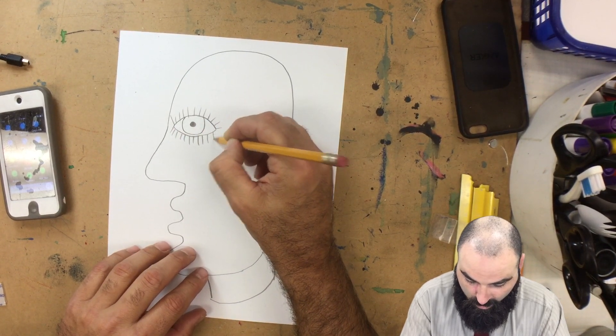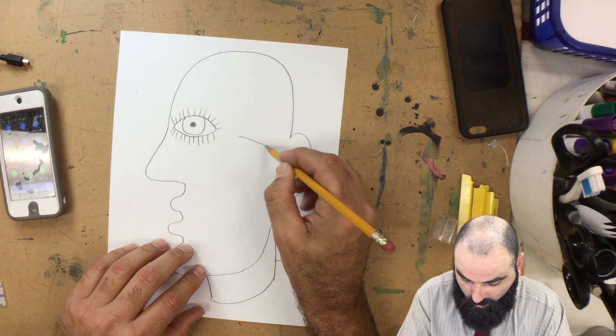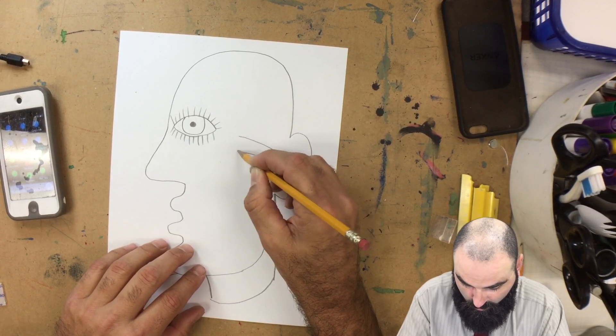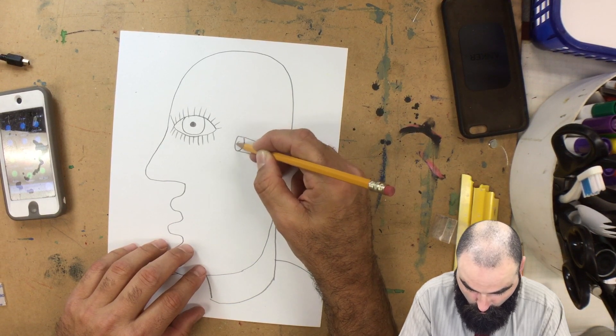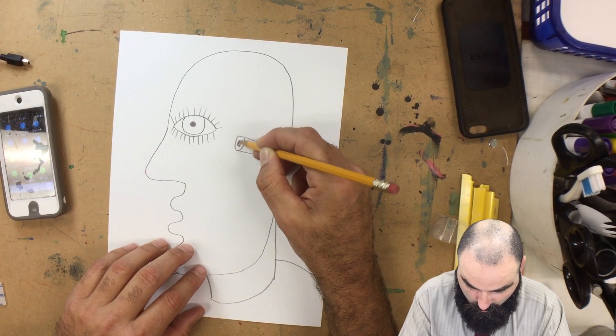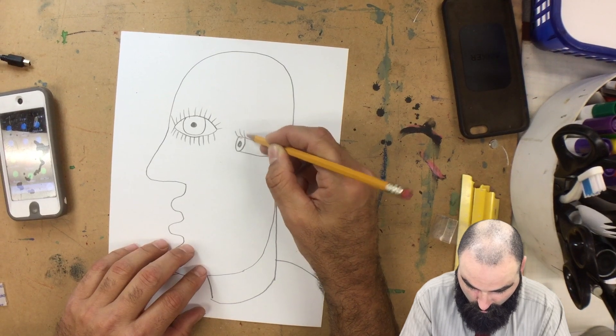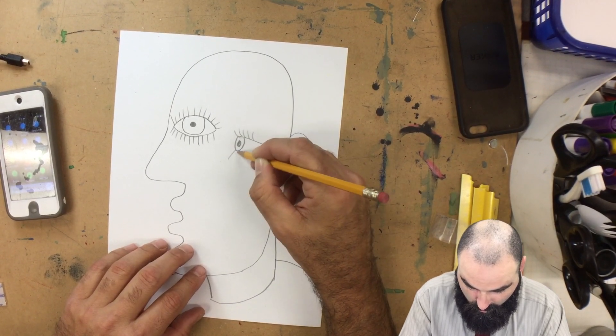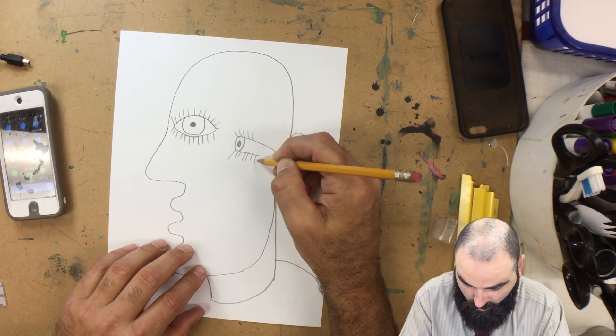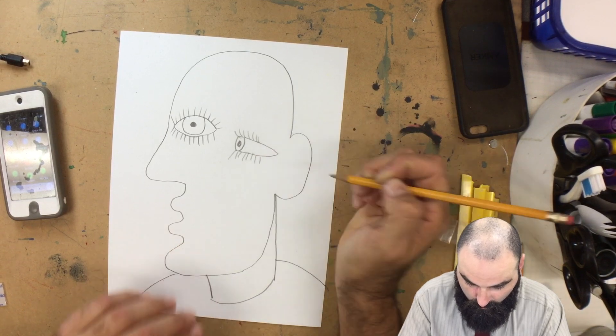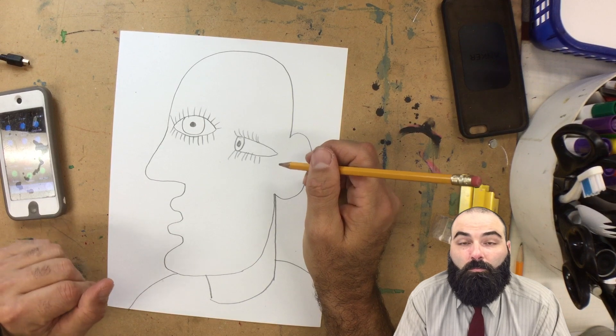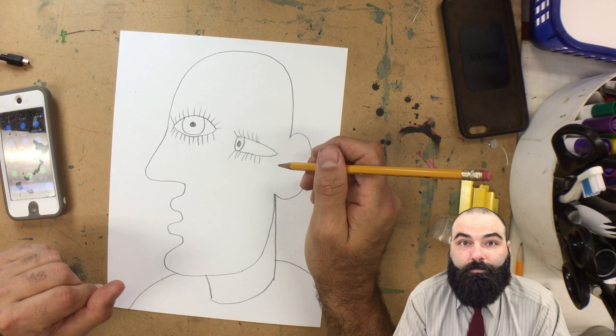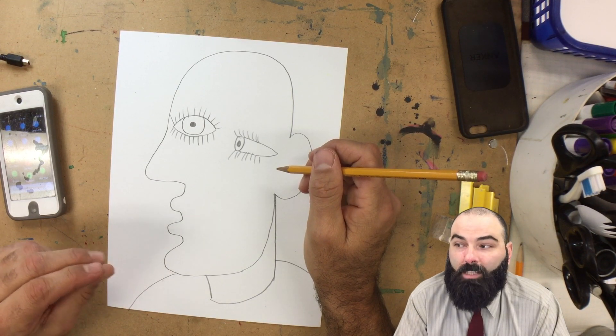And then the second eye is going to be kind of like a cone shape. It's going to be pointy at one end and on the other end it's going to be round. And then Picasso would usually do eyelashes here. So there's our front facing eye. Draw those eyes. Okay, next step.